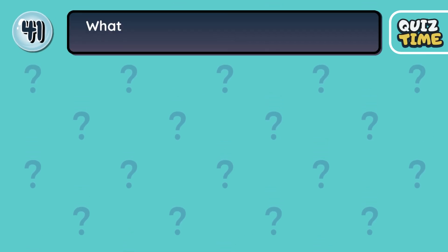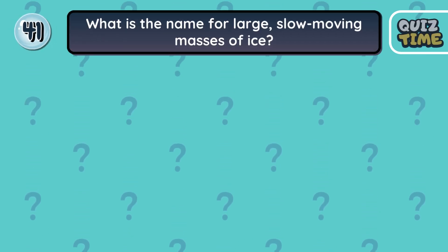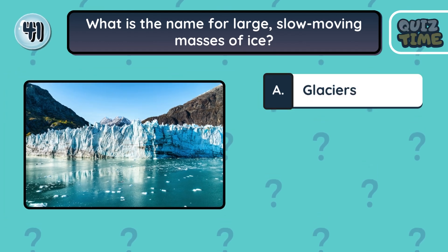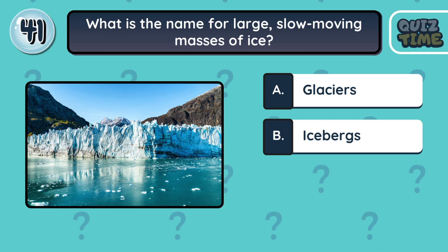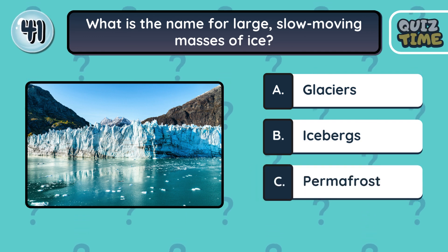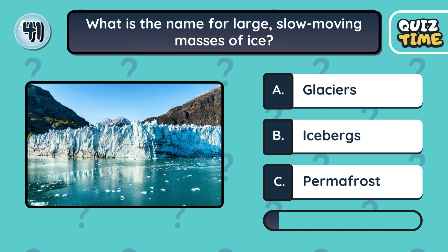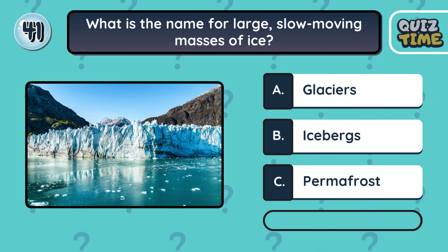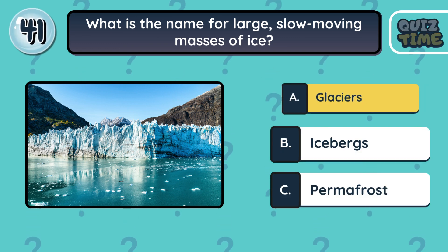Number 41. What is the name for large, slow-moving masses of ice? A. Glaciers. B. Icebergs. C. Permafrost. The correct answer is A. Glaciers.